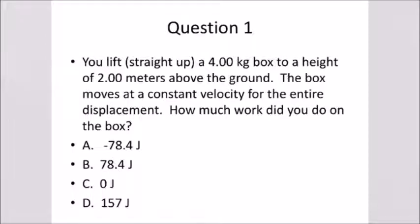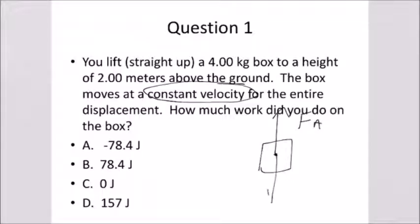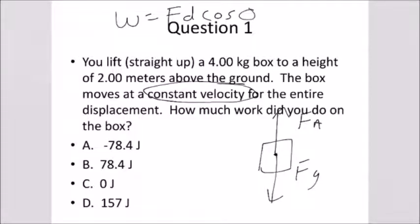Key point is the term constant velocity. That tells you that there's no net force acting on the object, which means you're lifting with a force equal but opposite to the weight or the force of gravity, so there's no net force acting on the box. The work done by you is equal to force times distance times the cosine of theta, where theta is the angle between the direction of the displacement and the direction of the force. In this case the displacement is going straight up, so the angle is zero.